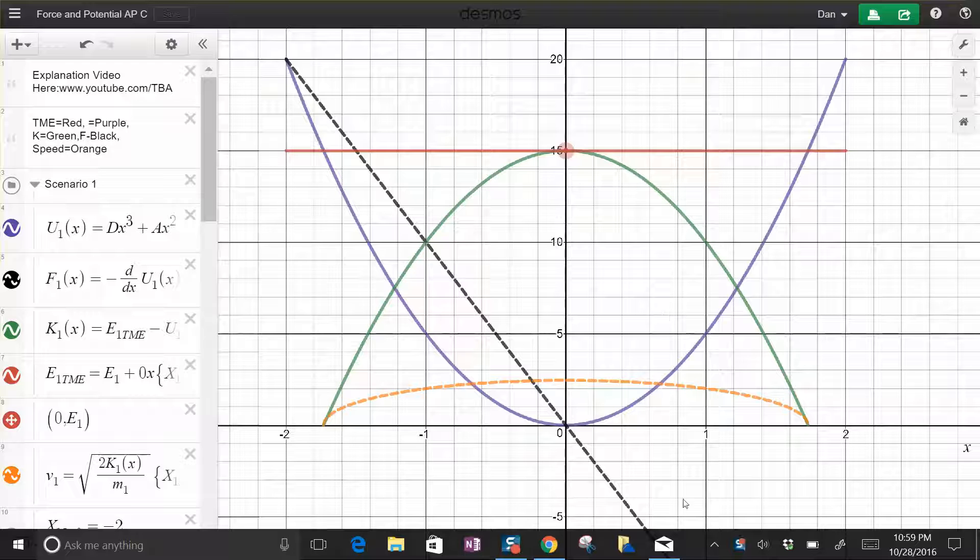When you look, it has all these different lines, and at first it's kind of confusing. The red one is the total mechanical energy, the purple one is the potential energy, the green one is the kinetic energy. The dashed line here, the black line, is the force, and the orange line is the speed.